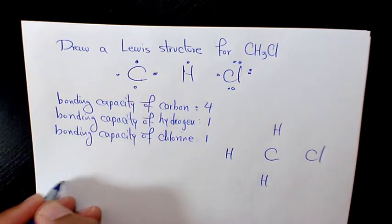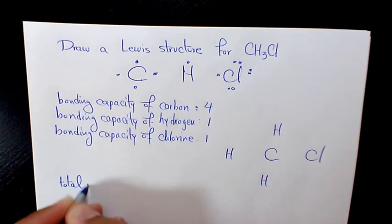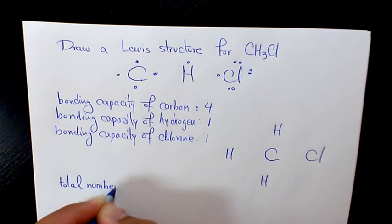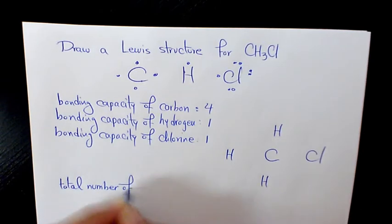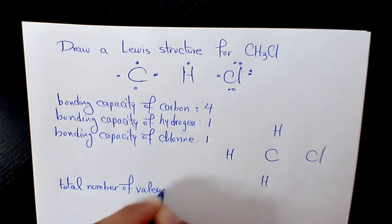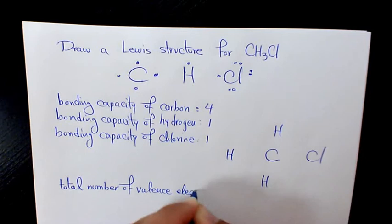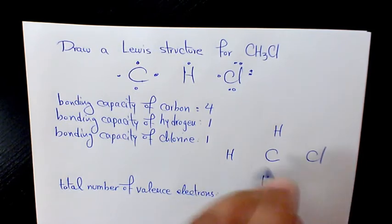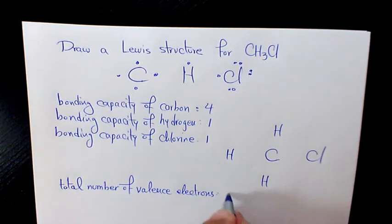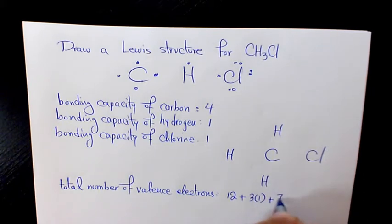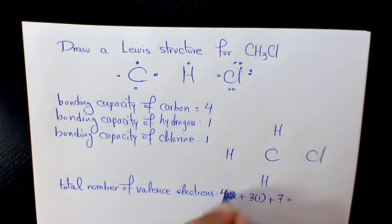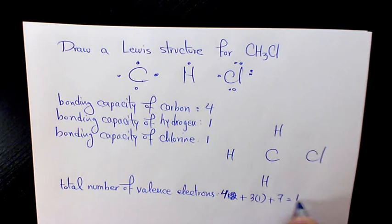So the total number of valence electrons is going to be 4 for carbon, plus 3 times 1 for hydrogen, plus 7 for chlorine. That gives us 4 plus 3 plus 7, which equals 14.